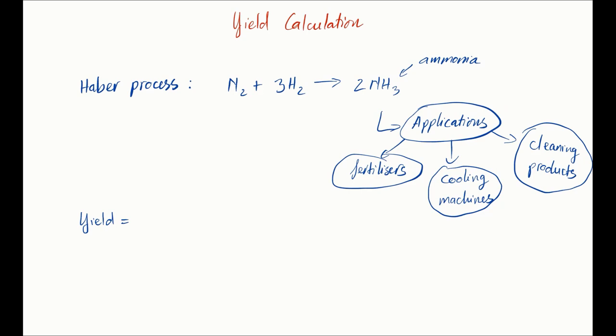You do that by dividing the actual yield that you collect and measure, divided by the theoretical yield. And by convention we multiply that number by 100%, and that will give us our percentage yield.